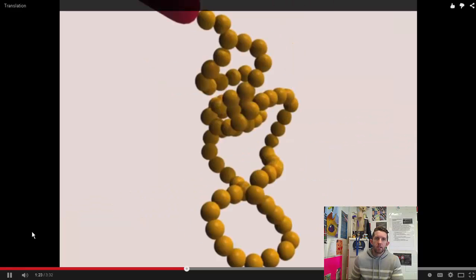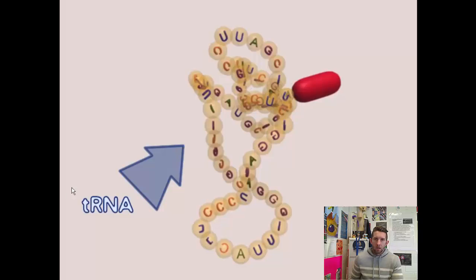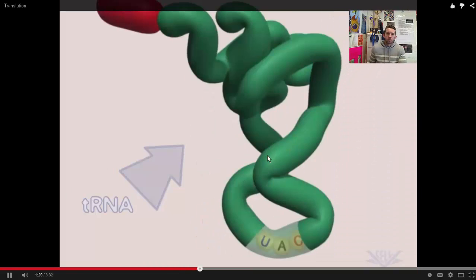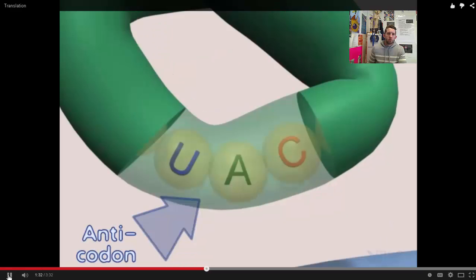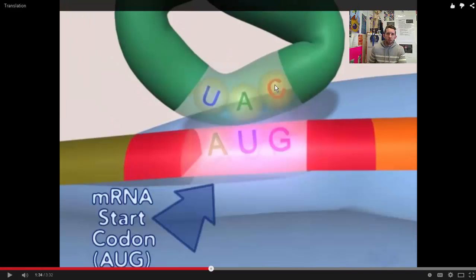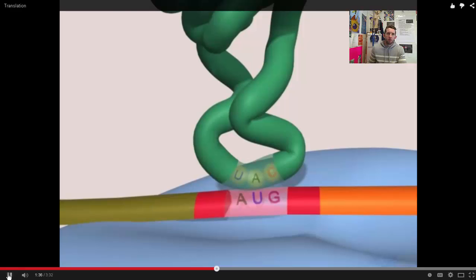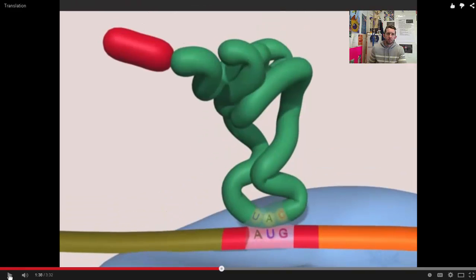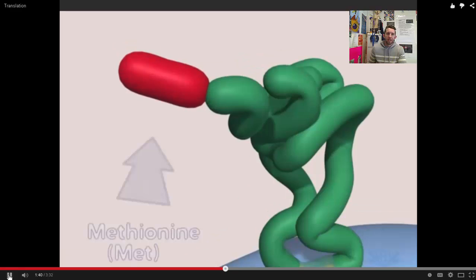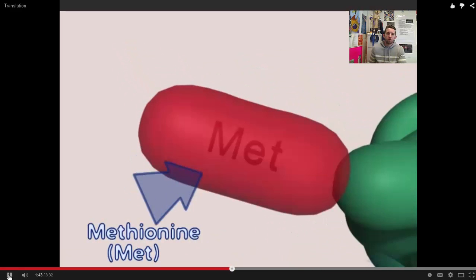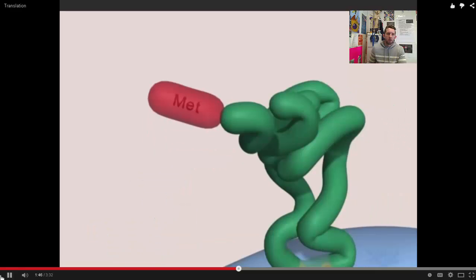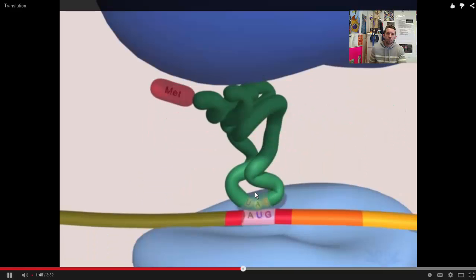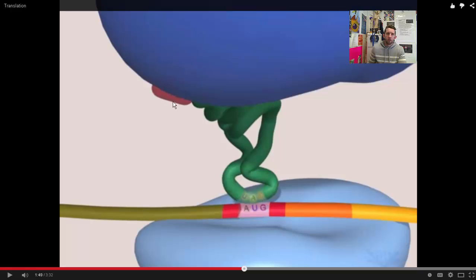In comes our tRNA molecule. You can see it's shaped in that way. It's a very characteristic shape of tRNA, and what matches up with AUG? U goes with A, A goes with U, C goes with G. So AUG called in UAC. And what did UAC bring with it? It brought with it this amino acid. What amino acid is it? It's methionine.